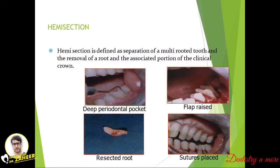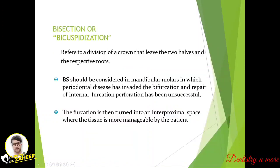Hemisection is defined as the separation of a multi-rooted tooth and the removal of a root along with the associated portion of the clinical crown — essentially splitting a tooth completely from the root end to the crown tip. When there is a deep periodontal pocket, we raise a flap, resect the tooth, and crowns are placed. Bicuspidization refers to division of the crown leaving the two halves with their respective roots intact — we are not removing a root, just separating the tooth into two.